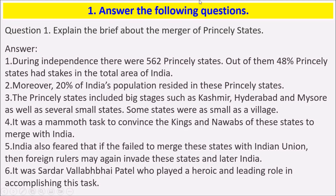The first question is: answer the following questions. The first one is: explain briefly about the merger of princely states. During independence there were 562 princely states. Out of them, 48% of princely states had stakes in the total area of India.